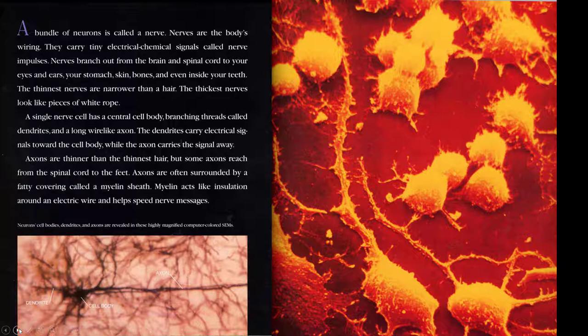A bundle of neurons is called a nerve. Nerves are the body's wiring. They carry tiny electrical chemical signals called nerve impulses. Nerves branch out from the brain and spinal cord to your eyes and ears, your stomach, skin, bones, and even inside your teeth. The thinnest nerves are narrower than a hair. The thickest nerves look like pieces of white rope. A single nerve has a central cell body, branching threads called dendrites, and a long wire-like axon. The dendrites carry electrical signals toward the cell body, while the axon carries the signal away. Axons are thinner than the thinnest hair, but some axons reach from the spinal cord to the feet. Axons are often surrounded by a fatty covering called the myelin sheath. Myelin acts like insulation around an electric wire and helps speed nerve messages.